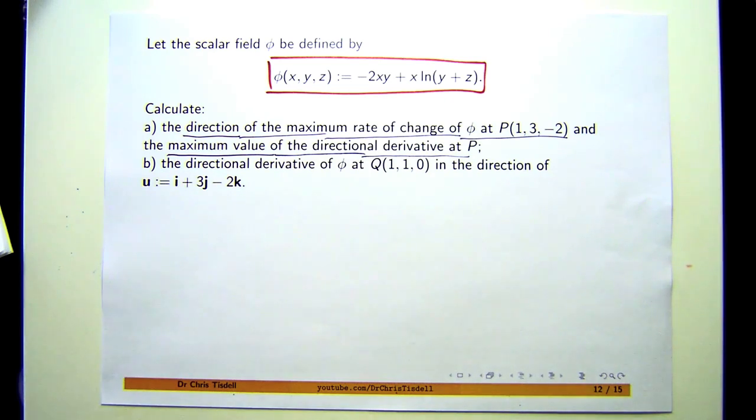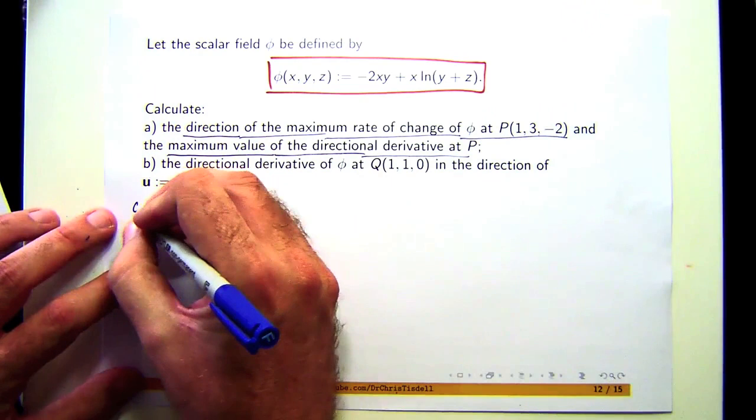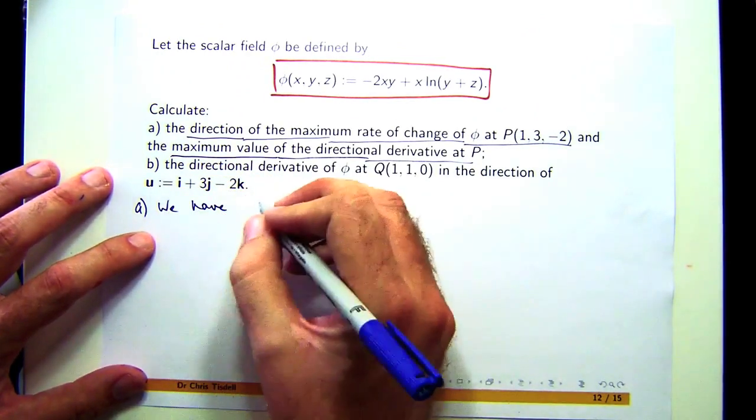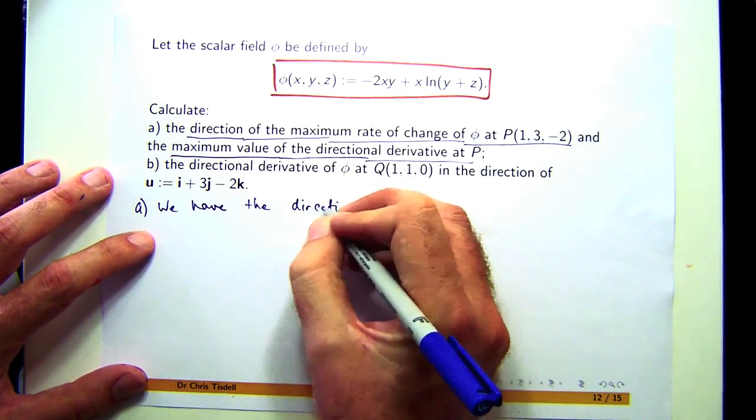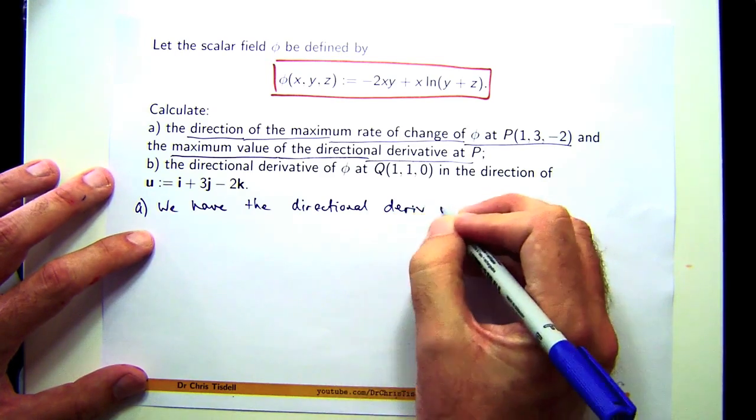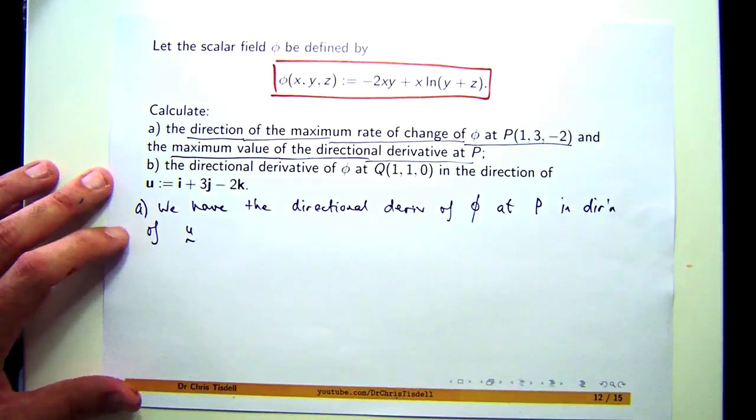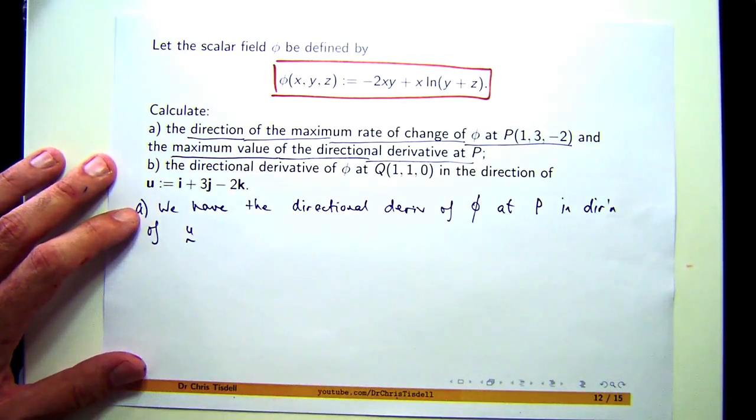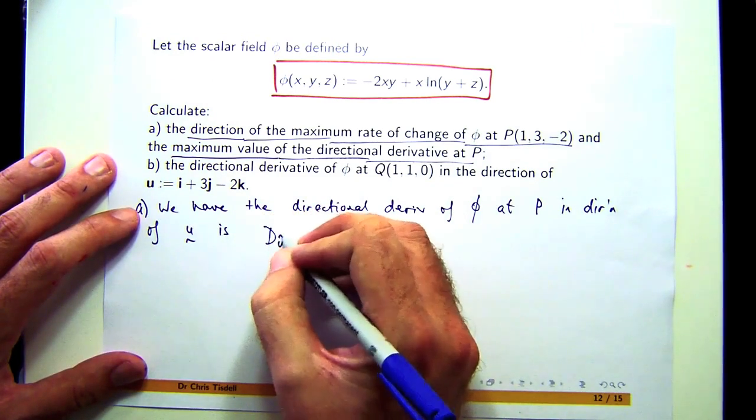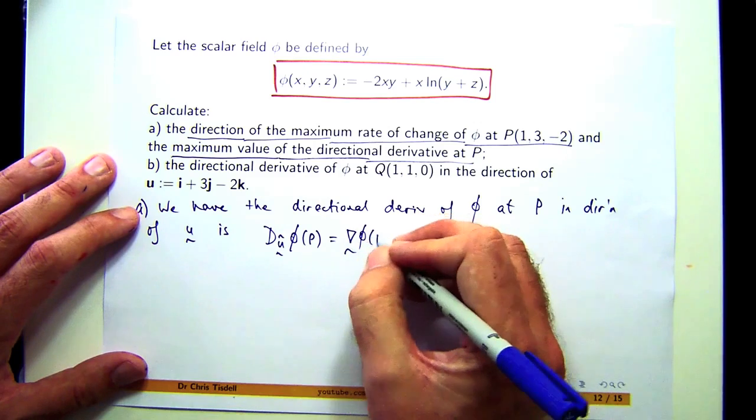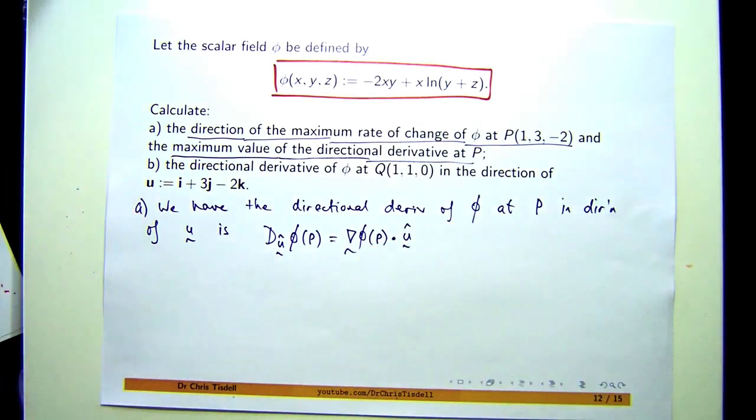Okay, so the direction of the maximum rate of change of φ at this point. So it's like a two-part problem, part A. We're going to use the directional derivative and a dot product. So the directional derivative of φ at P in the direction of, say, U - don't know what U is. That's actually what the question is asking us to find out. This is the notation. The û means a unit vector, and it's just a dot product involving the gradient at the point P, and a unit vector in the direction of whatever vector we're using. Whatever direction, whatever U is. That's what we've actually got to find in this problem.